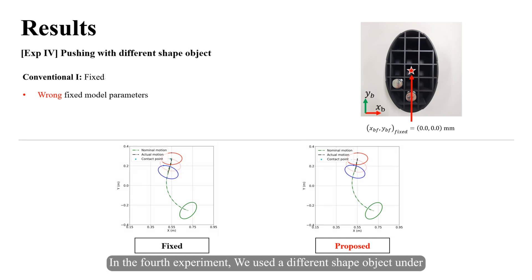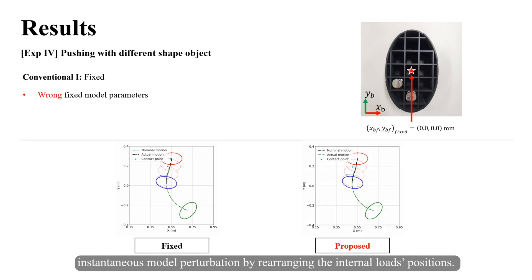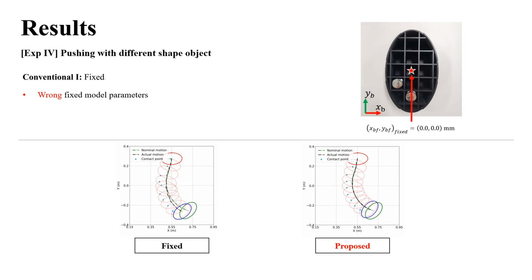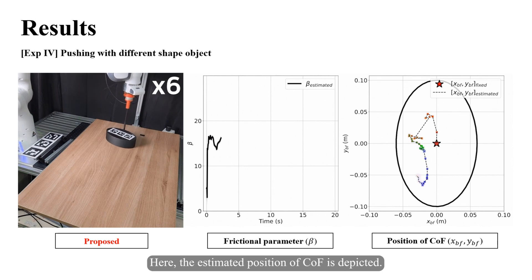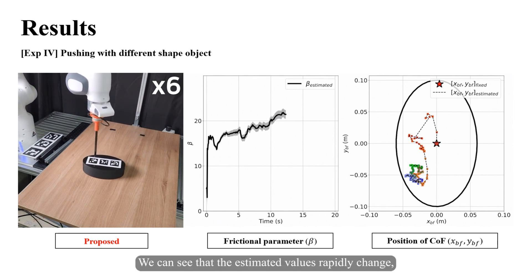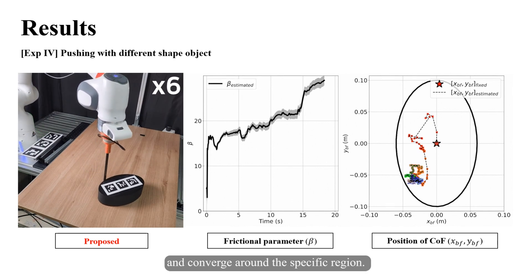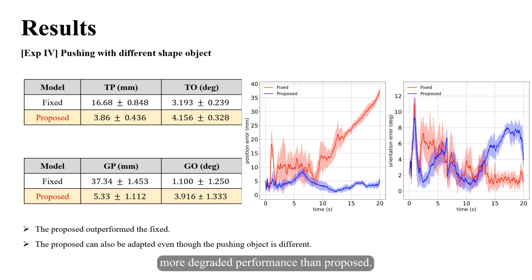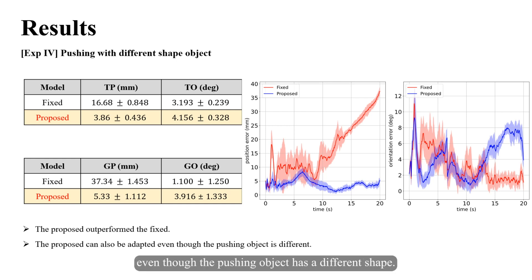In the fourth experiment, we used a different shape object under instantaneous model perturbation by rearranging the internal loads' positions. The estimated position of the center of friction is depicted, and we can see the estimated values rapidly change and converge around a specific region. The fixed model shows more degraded performance than the proposed method, verifying that the proposed framework can also adapt even when the pushing object has a different shape.